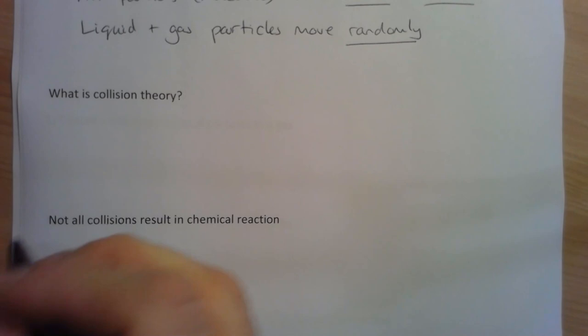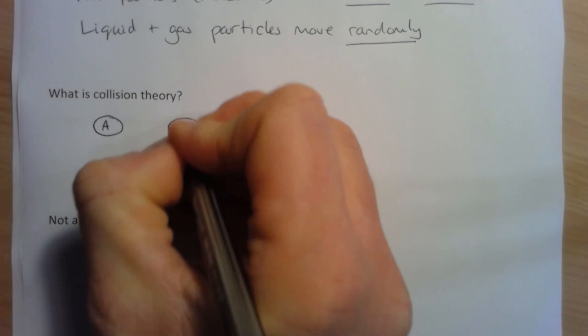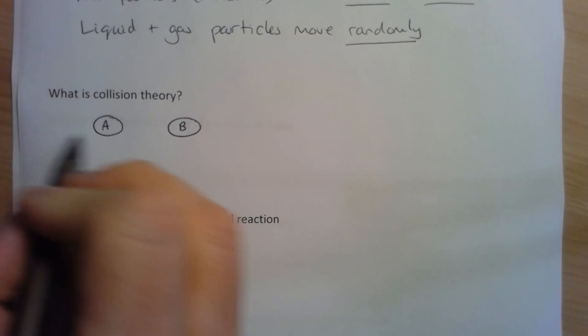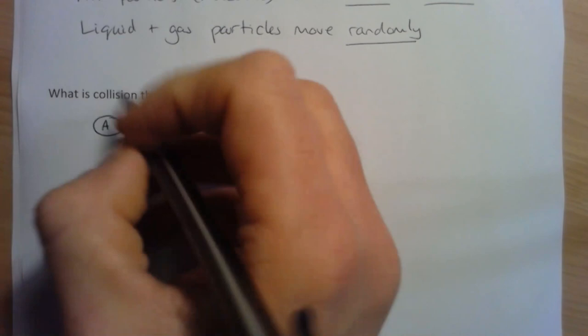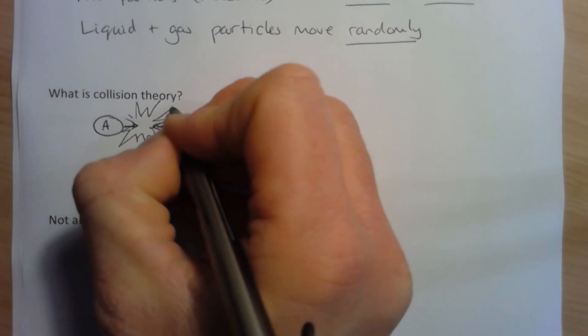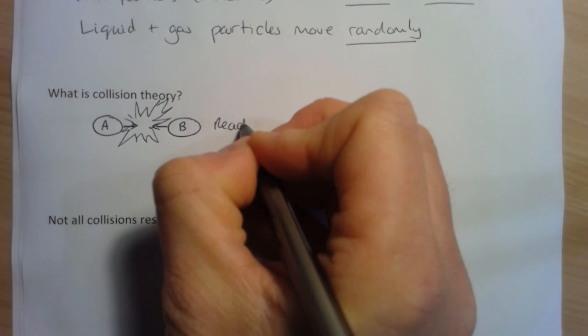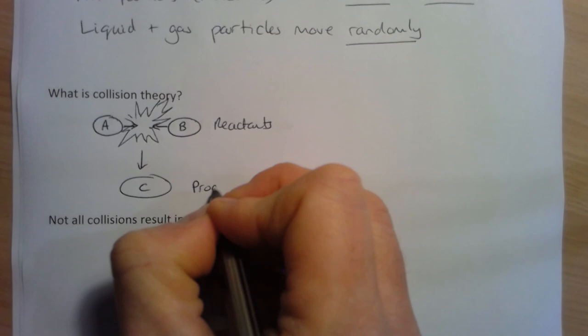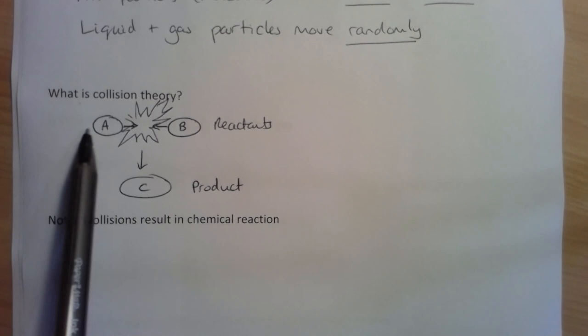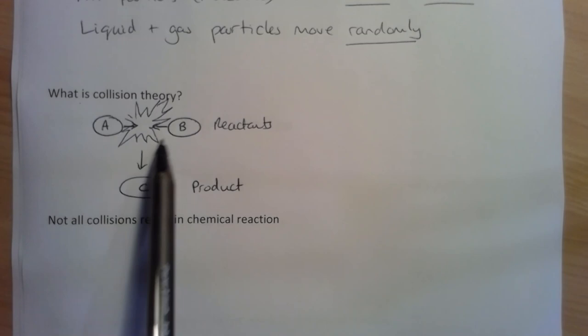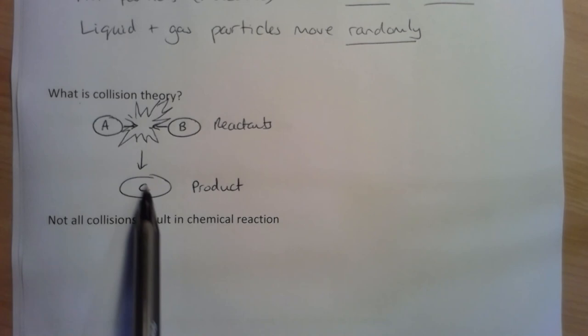So what is collision theory? We have reactant molecules — I'm going to label my reactants simply as A and B. These are two reactant particles moving randomly, and there's a chance they could hit each other. When they do hit each other, they make — in this case — just one product. Collision theory looks at reactant particles moving, colliding — remember 'collide' means hit each other — and then forming products.